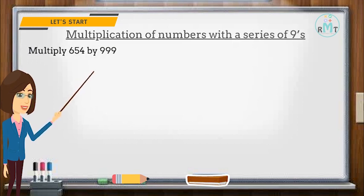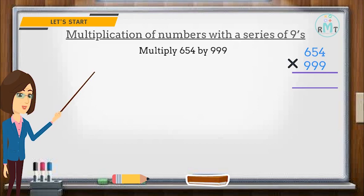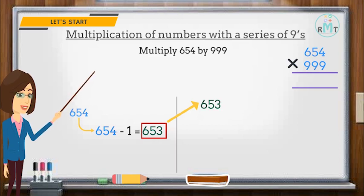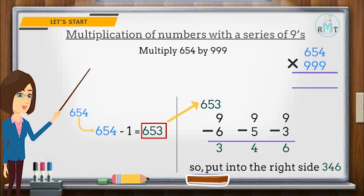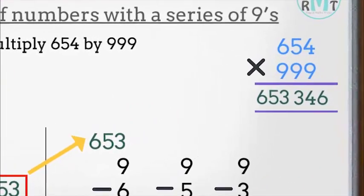Multiply 654 by 999. We subtract 1 from 654 and write the answer 653. Now we subtract each of the digits from 9 and write them one by one: 9 minus 6 is 3, 9 minus 5 is 4, 9 minus 3 is 6. So the final answer is 653,346.